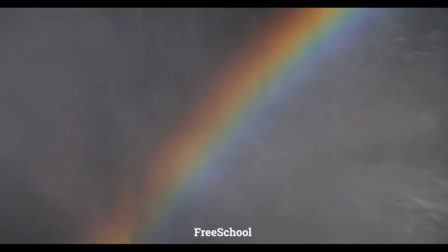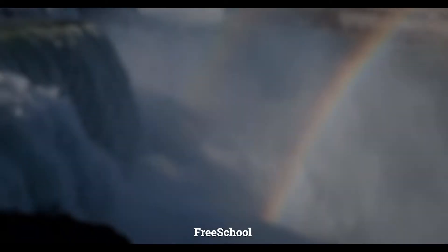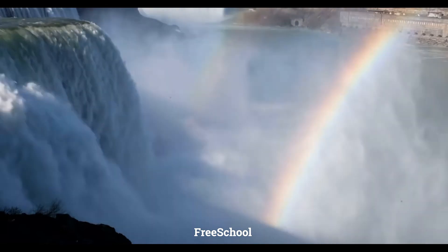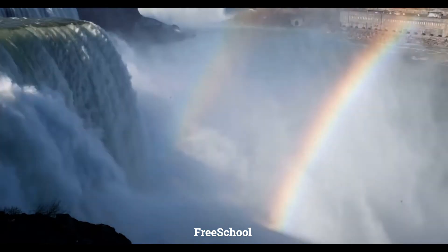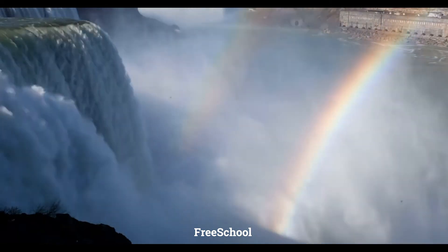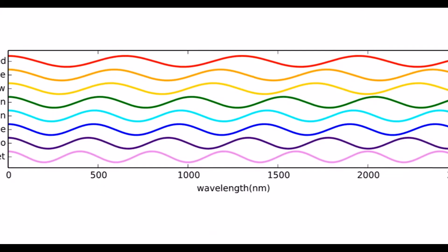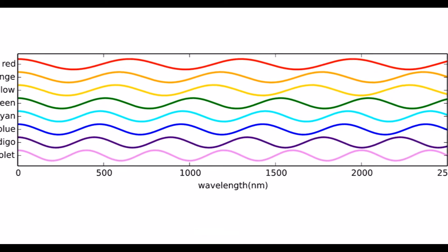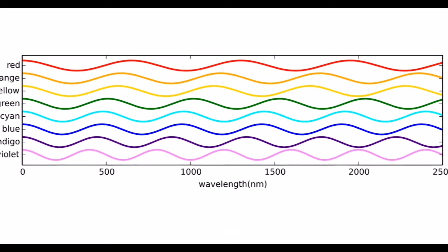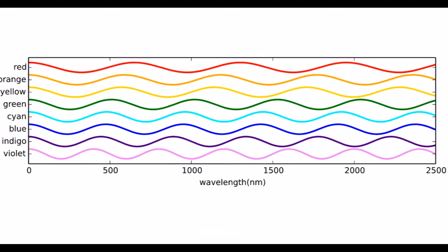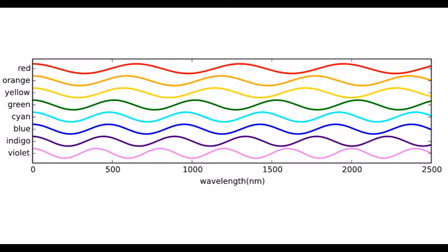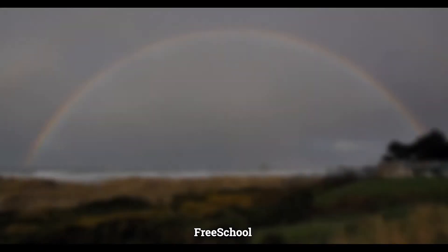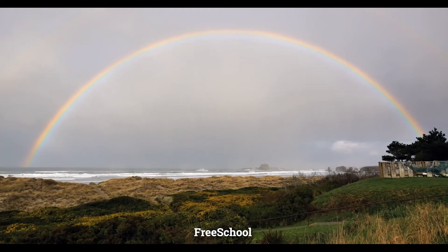Usually when we talk about a rainbow, we say it is made of seven colors: red, orange, yellow, green, blue, indigo, and violet. Each color has a different wavelength. Red has the longest wavelength in the spectrum of visible light, and violet has the shortest wavelength. All the other colors have wavelengths in between. The colors of a rainbow are always in the same order because the colors are arranged according to their wavelengths.